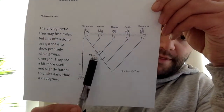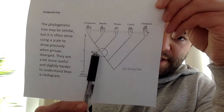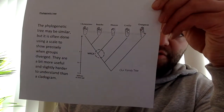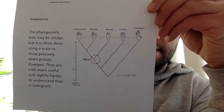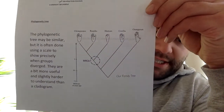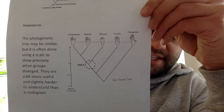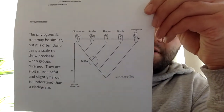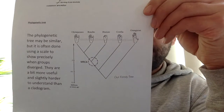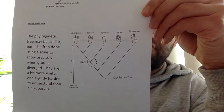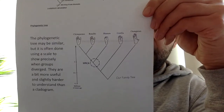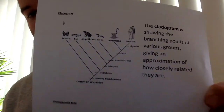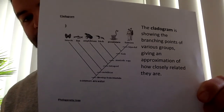For example, this point that's circled is the point at which humans branched out from the groups that went on to become chimpanzees and bonobos. We can see by looking at the scale that happened in the region of about five to six million years ago. A phylogenetic tree shows us both the relatedness between species, but also when they branched off with a more exact timeline, as opposed to a cladogram, which just shows us when it happened but doesn't give us a scale.